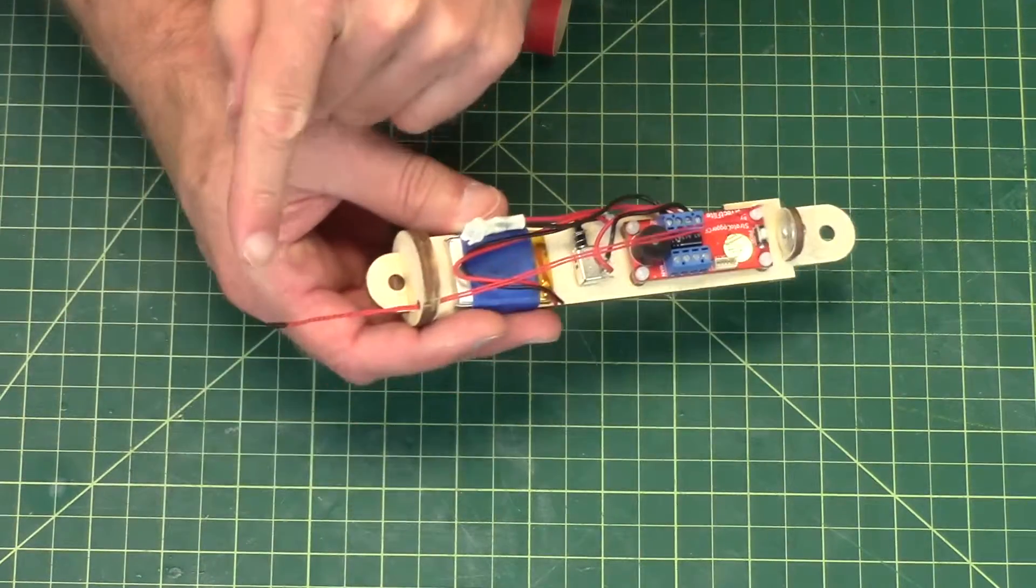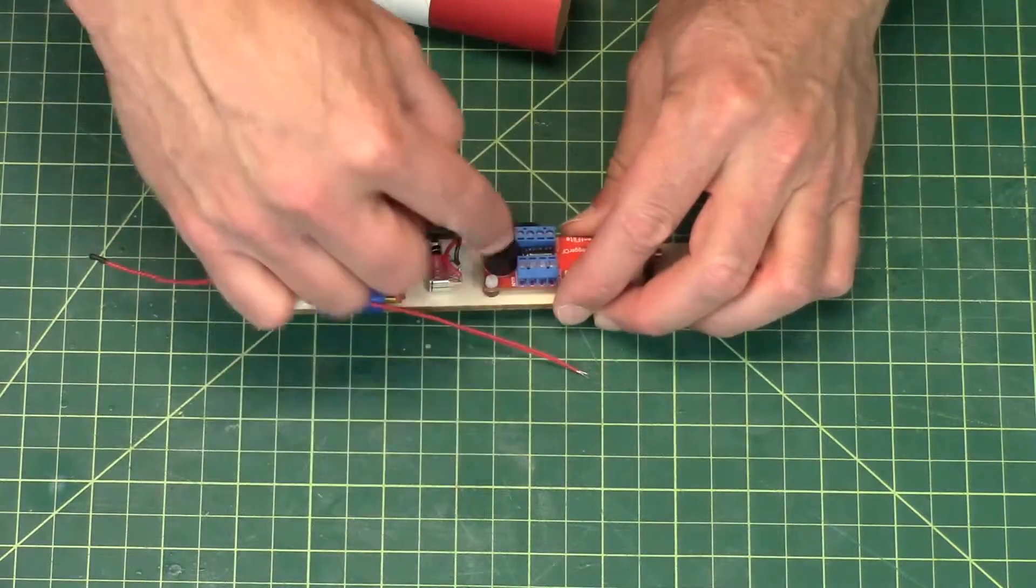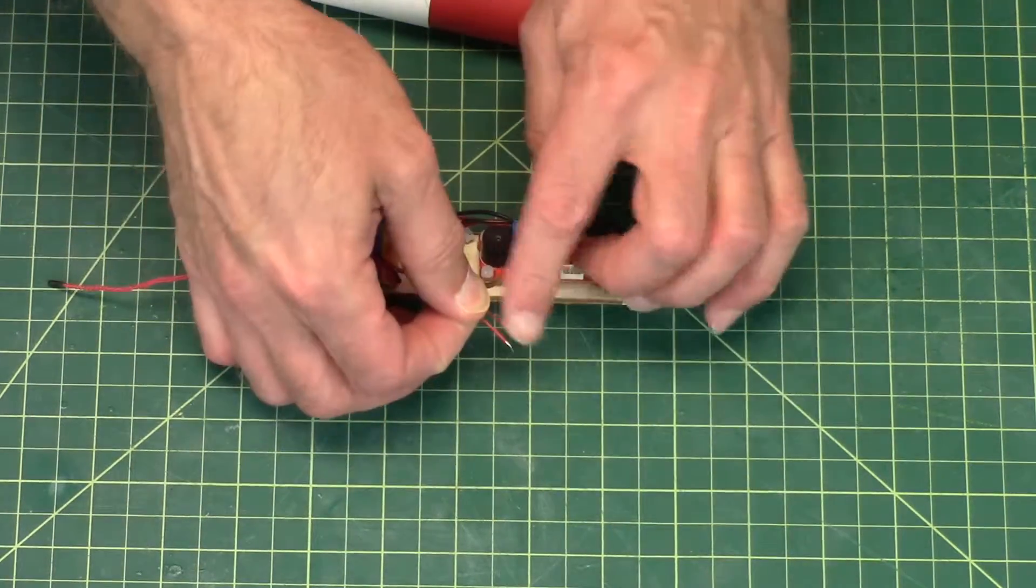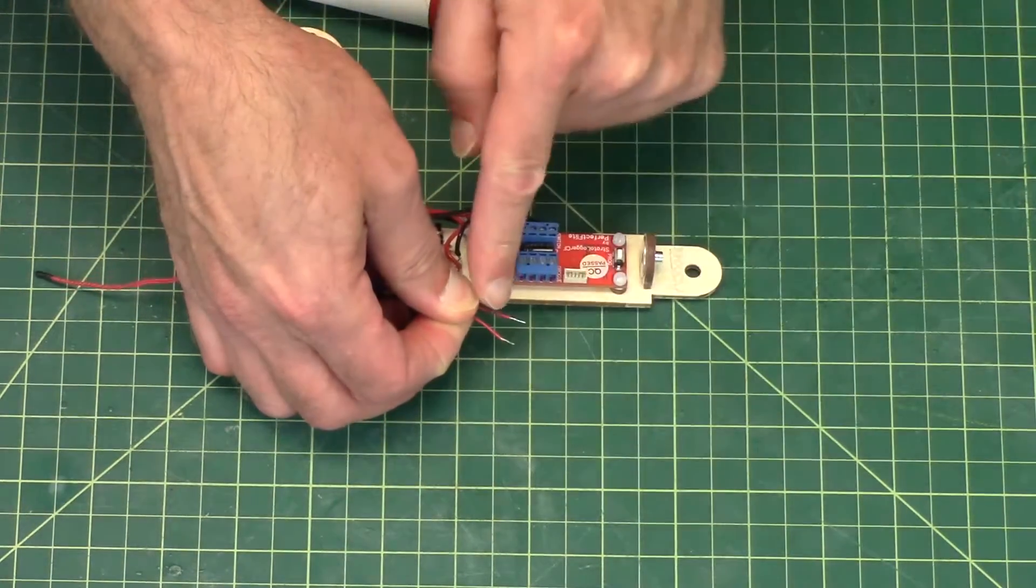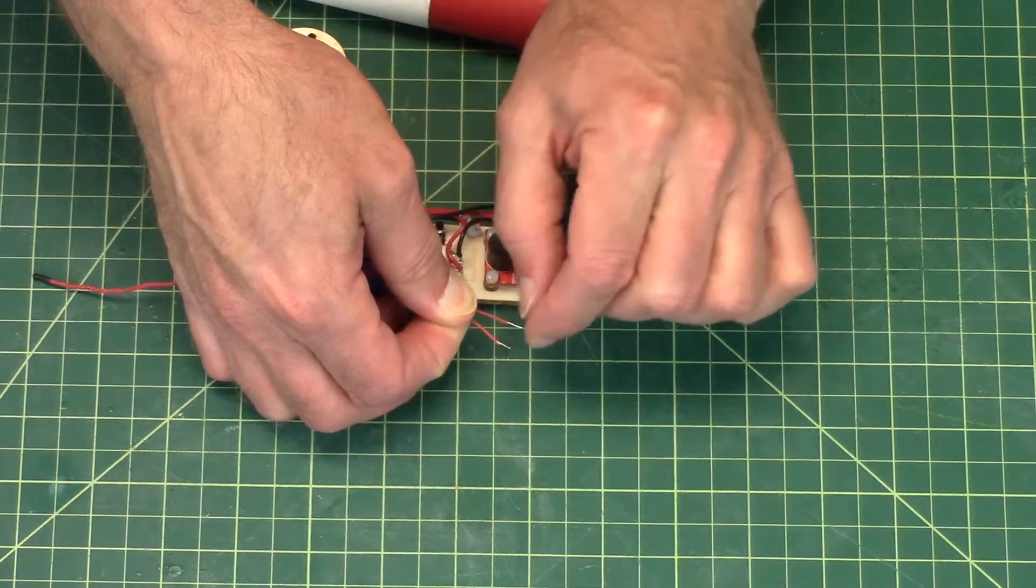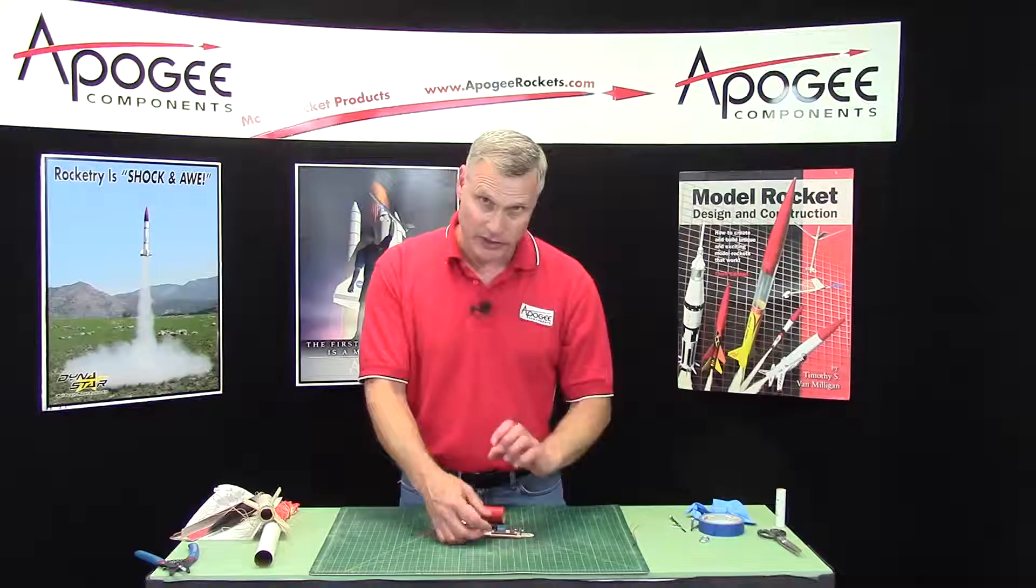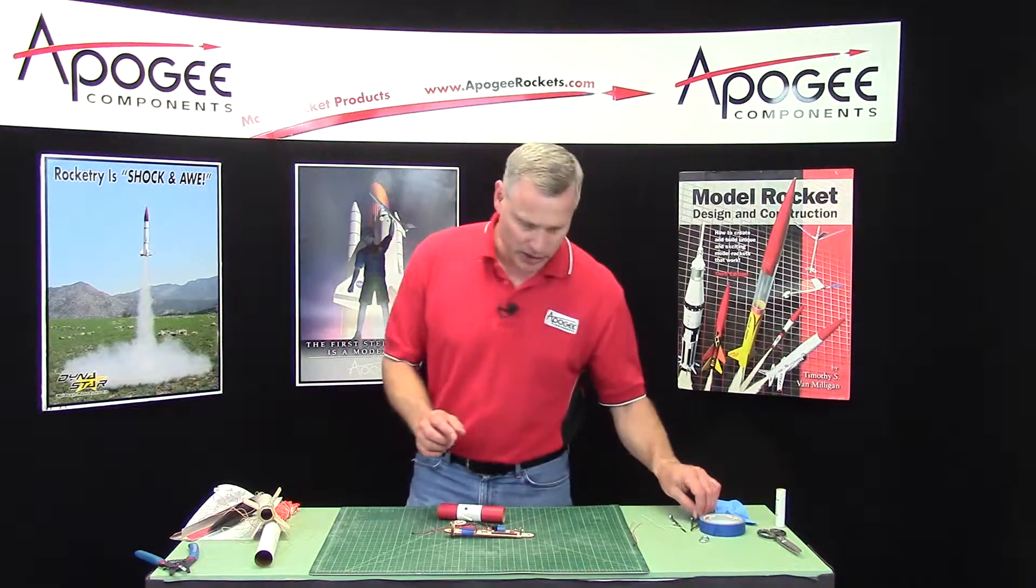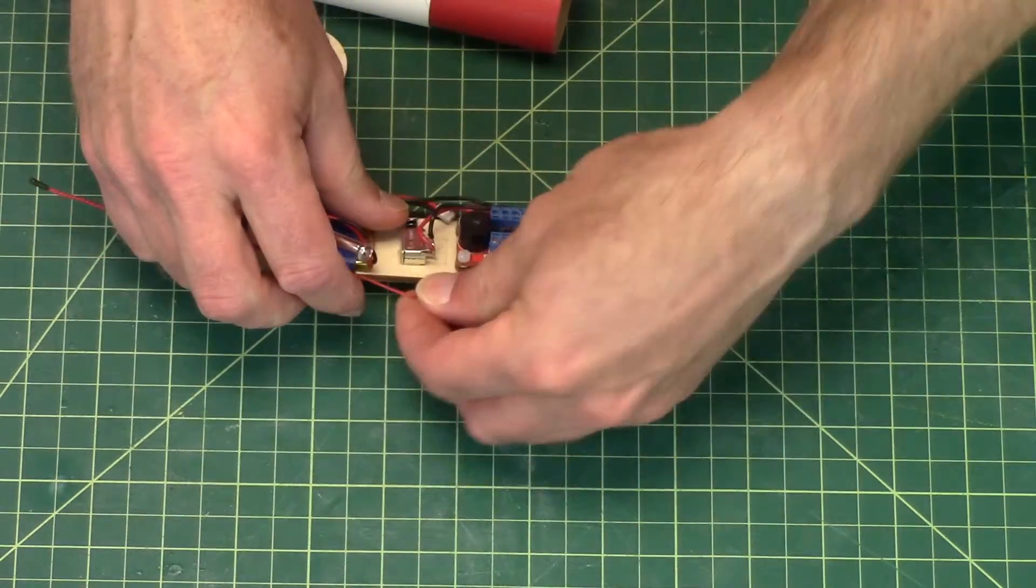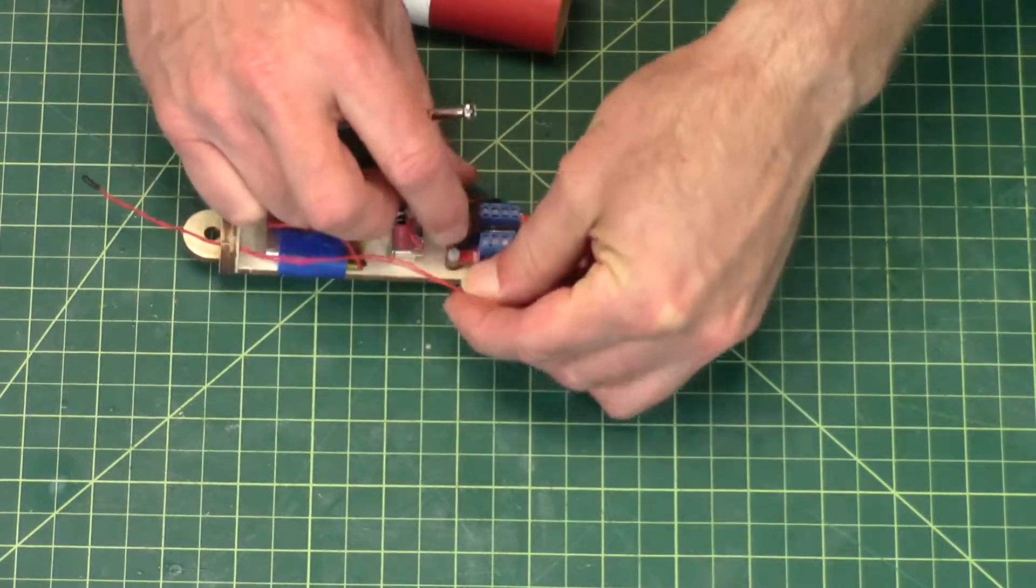This ejection charge is the main parachute. So that's going to hook up to where it says main on your altimeter. Now again on these wires you want to cut them to only one eighth inch approximately of wire is visible. Because otherwise they could touch together and short themselves out. And in that case it's not going to fire off. So this one's going to go to the main. So I'm going to put it into the terminal block. And that's what these are called here.